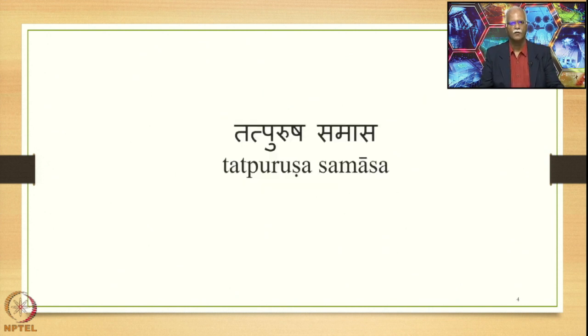In this course we are concentrated on the Tatpurusha Samasa. Tatpurusha is one of the four major types of Samasas in Sanskrit. Avibhava, Tatpurusha, Bahuvrihi, and Dvandva are the major four types stated by Panini in his Ashtadhyayi in this particular order.